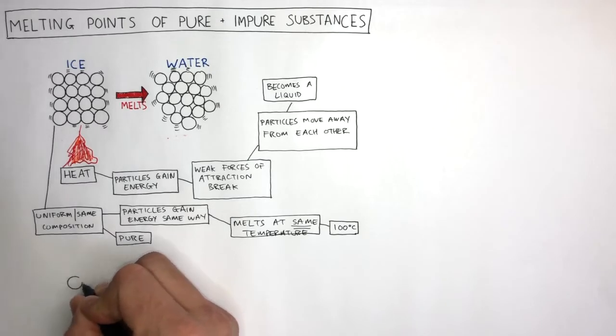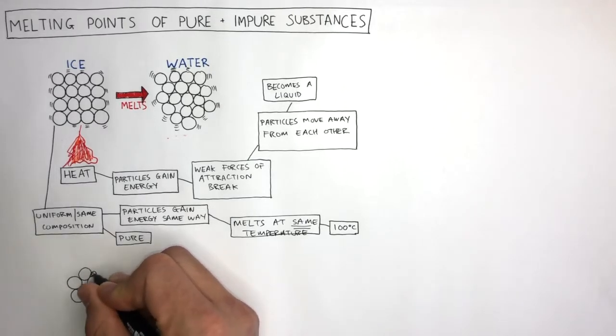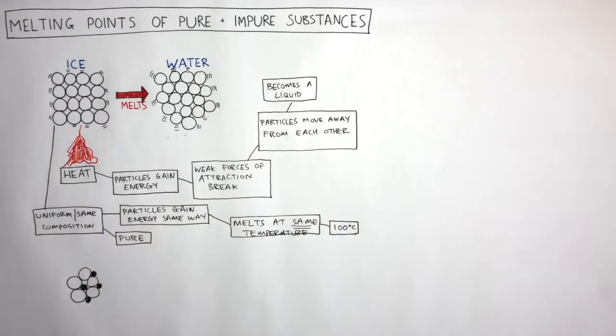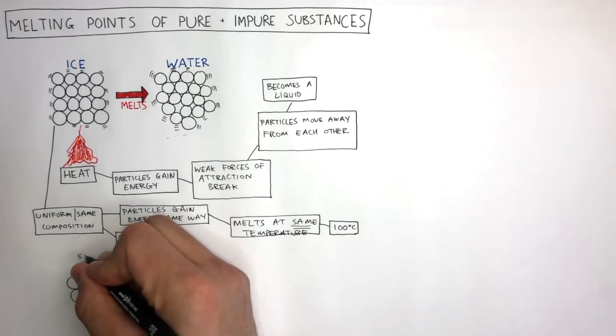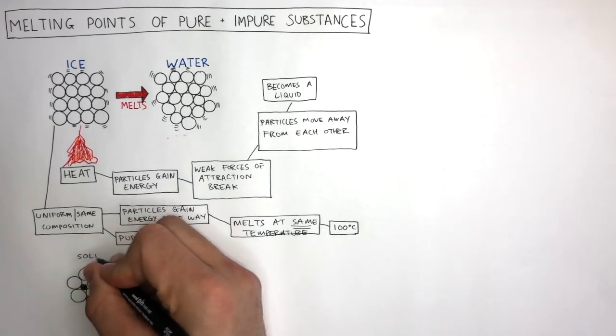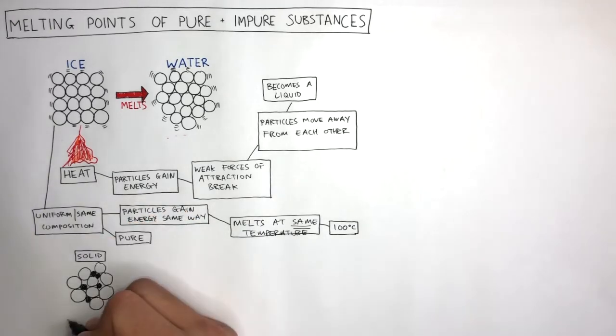This particle diagram represents a mixture containing two different substances, represented by the big white circle and the smaller black circle. Although the particles are not in a regular arrangement, this represents a solid. This is an impure substance because it contains different substances where the composition is different throughout.